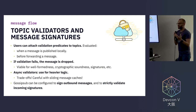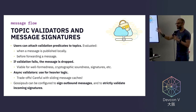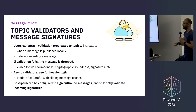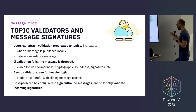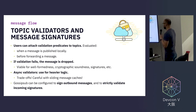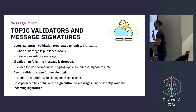We also have the concept of topic validators and message signatures. An application can attach validation predicates to topics — ETH 2.0, for example, uses this for validating signatures in blocks and transactions being propagated. When a message is published locally or before forwarding, the predicate is called; if it succeeds, the message continues dissemination, otherwise it is dropped. We have asynchronous validators for heavier logic, and GossipSub can also be configured to sign outbound messages and to strictly validate signatures as well.